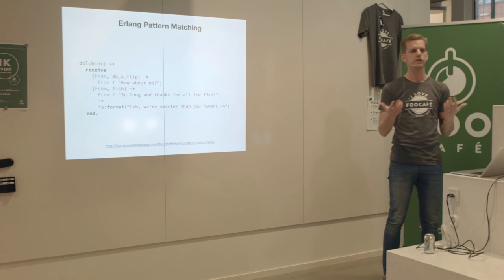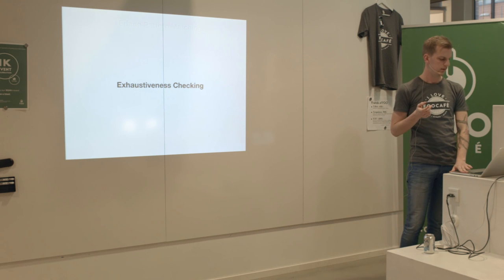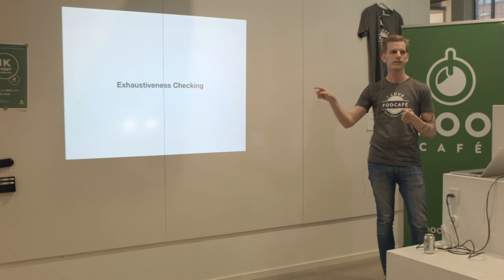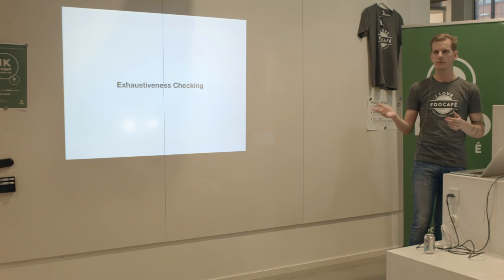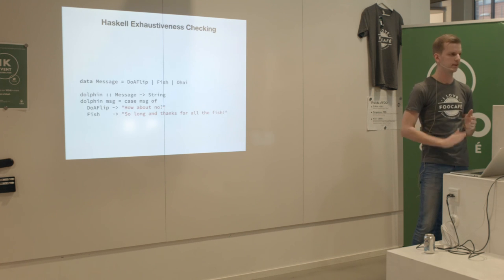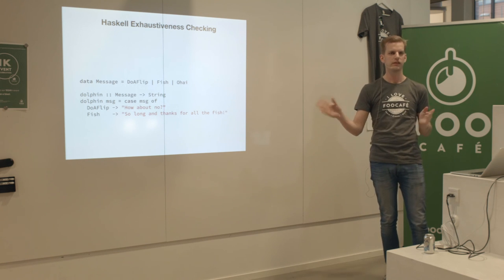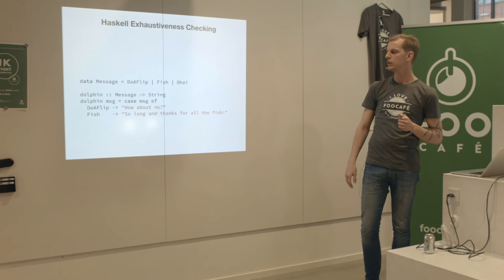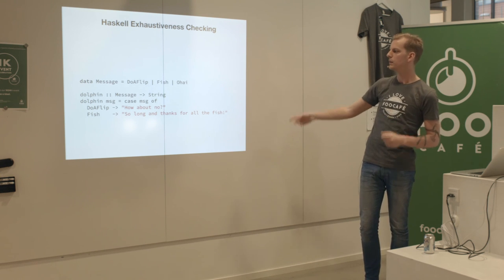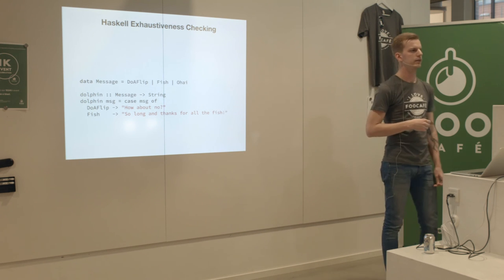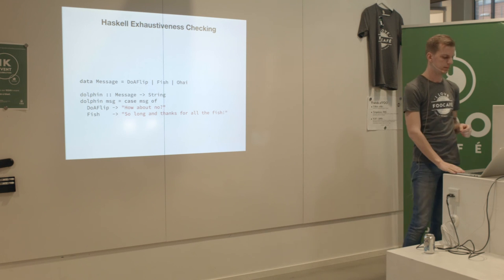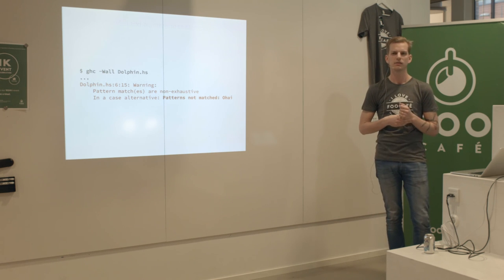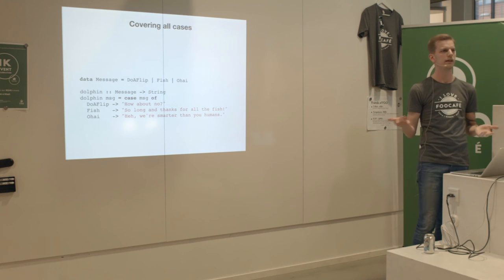If we translate to Haskell: we receive a message, check if it's a 'doFlip' message and return a string, or a 'fish' message and return another string. But we forgot to match a third value. When we compile, Haskell says 'you didn't match the OHIGH value.' We have to add it and then Haskell is happy. That's exhaustiveness checking - you're sure you didn't miss any cases.